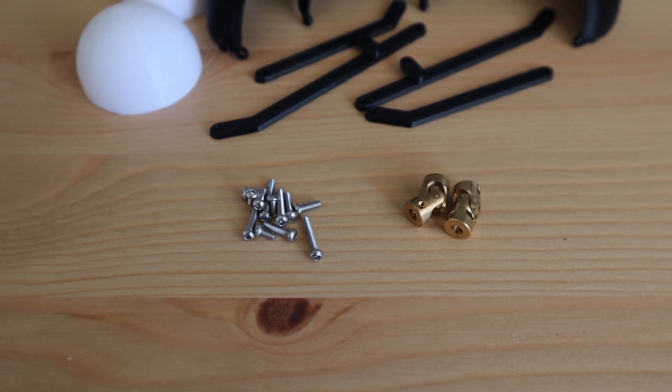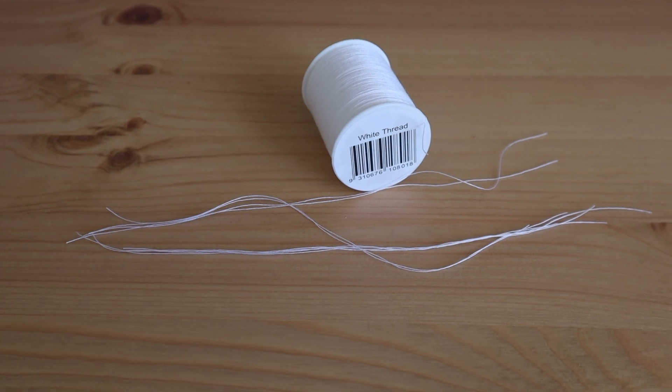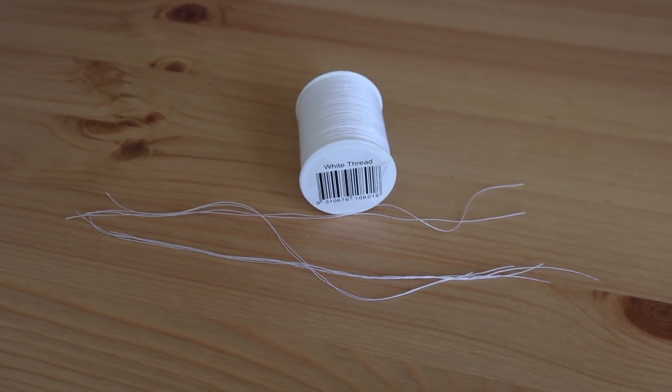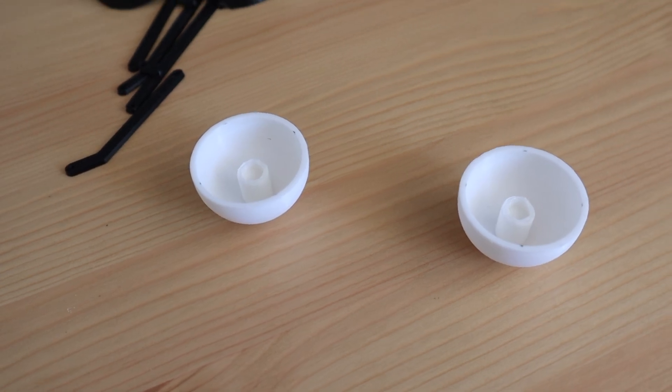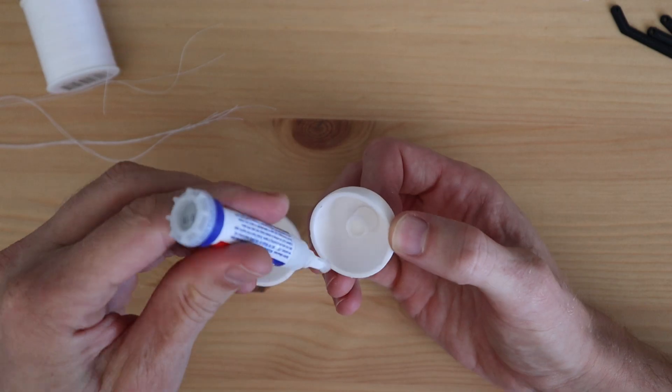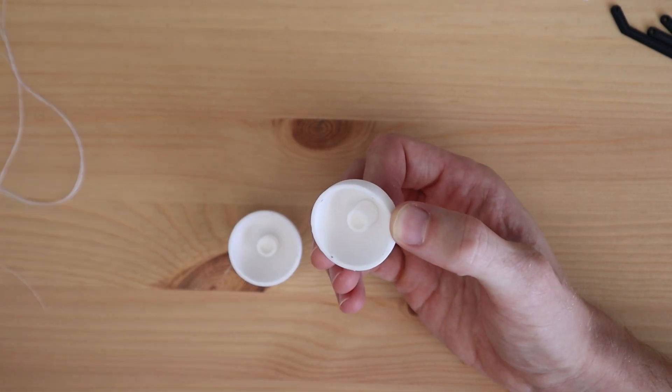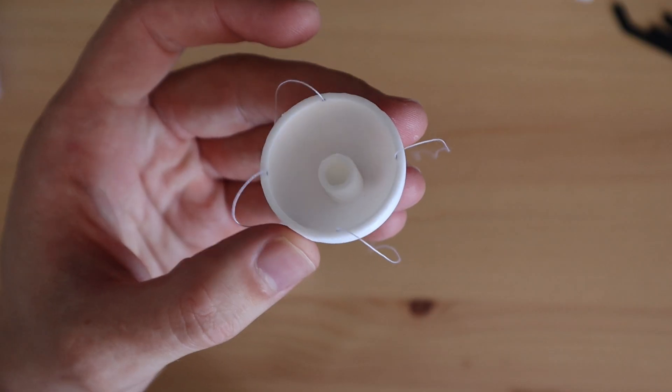You'll also need a range of M2 screws and nuts, and then some cotton thread or thin string to connect the eyeballs to the servos. Let's start by adding the thread to the eyeballs. We just need to glue a 10cm length of thread to four opposing inside edges of each eyeball.